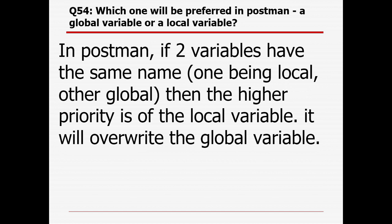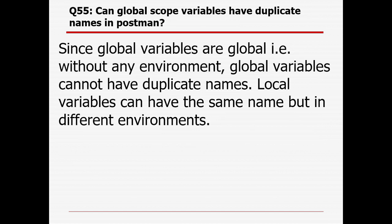Which is preferred in Postman — a global variable or a local variable? If two variables have the same name, one being local and the other global, then the higher priority is given to the local variable — it will overwrite the global variable. Can global scope variables have duplicate names in Postman? Yes, global variables can have the same name but in different environments.